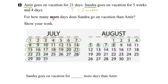Now we can figure out how many more days Sandra is on vacation than Amir. Amir ends his vacation on the 21st, so the extra days would start on the 22nd of July. Let's use red. She would have 1, 2, 3, 4, 5, 6, 7, 8, 9, 10, 11, 12, 13, 14, 15, 16, 17, 18 more days of vacation.